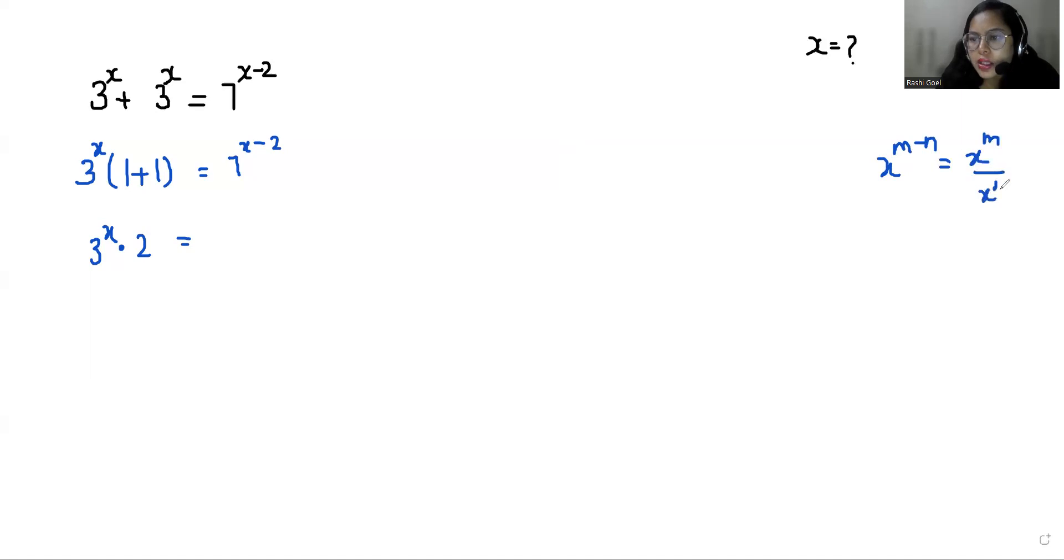So 7 power x by 7 power 2. So 2 by 7 square is 49.